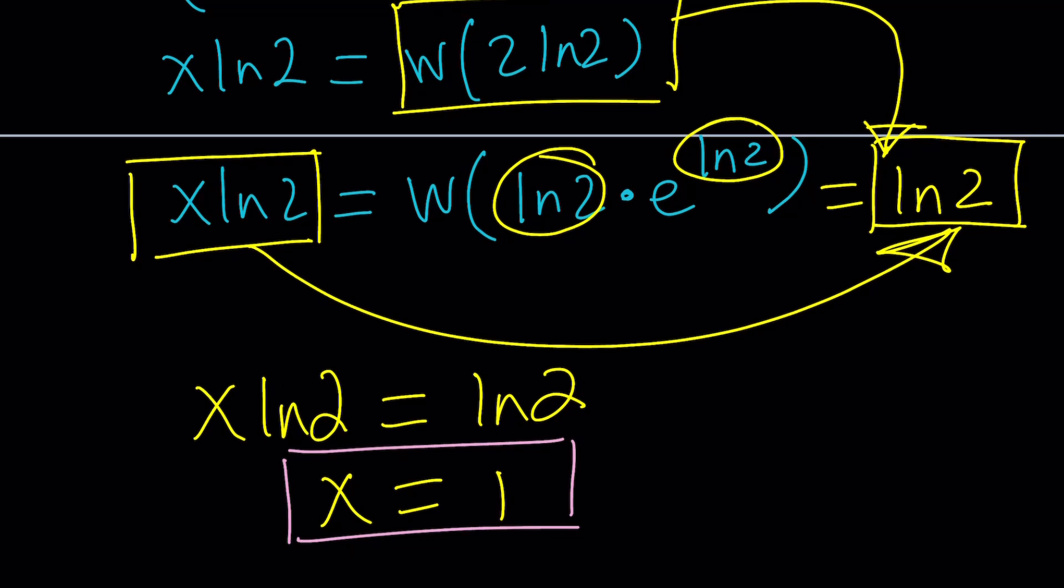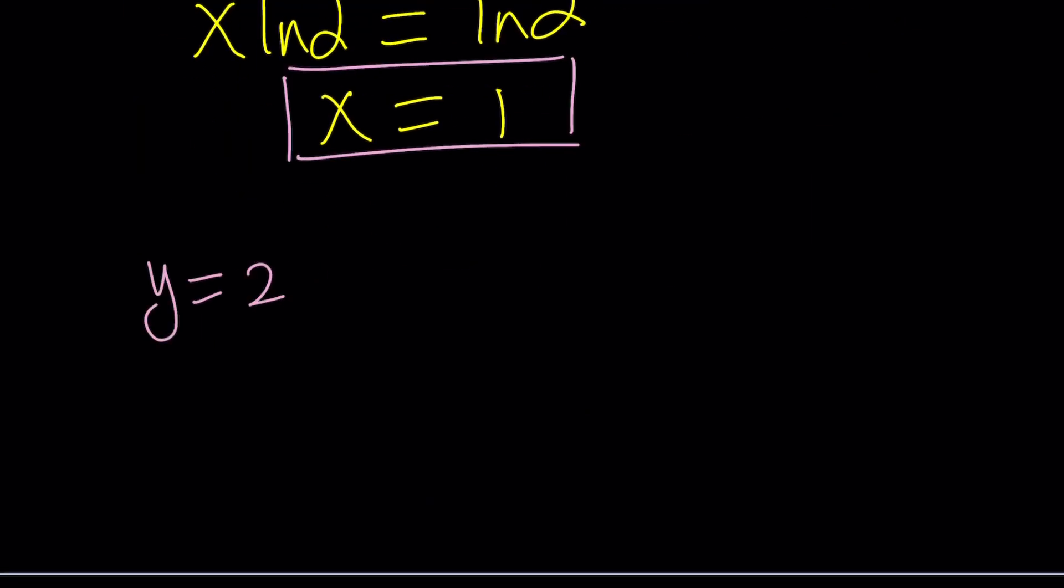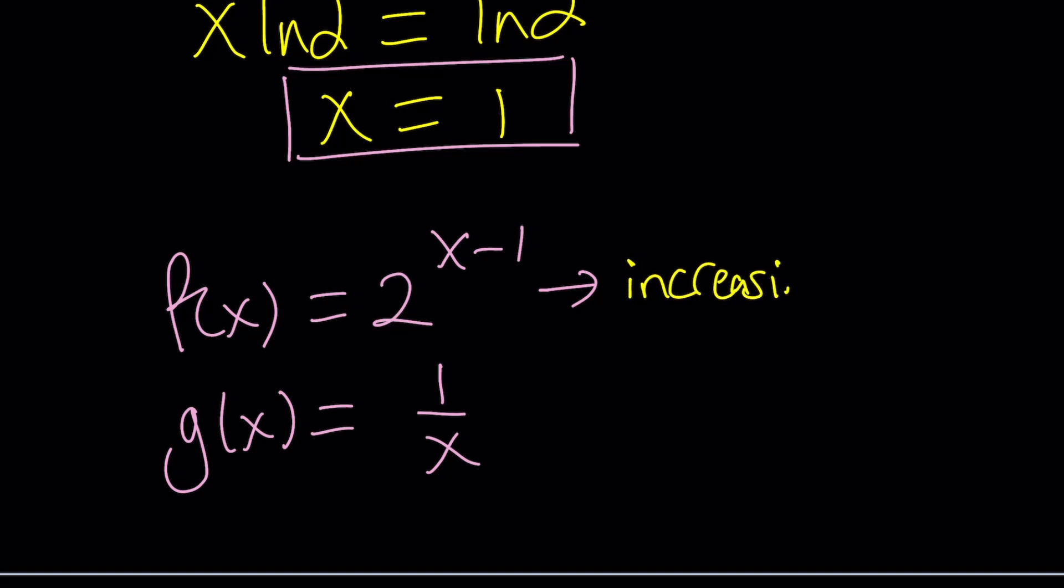So let's go ahead and look at this from a calculus perspective a little bit. So suppose f of x equals 2 to the power x minus 1. Now this is an exponential function. And let's write g of x as 1 over x. Notice that f of x is exponential. Therefore, and the base is greater than 1, this is going to be an increasing function.